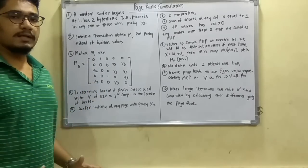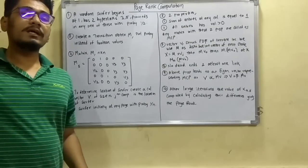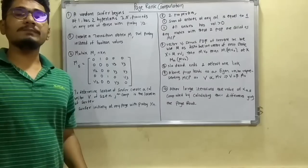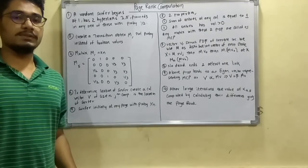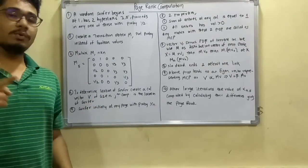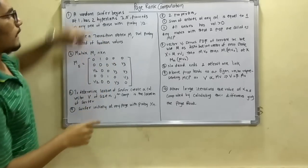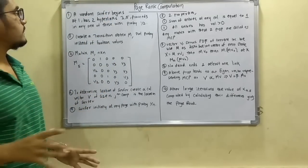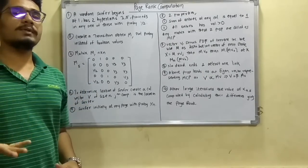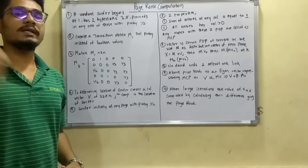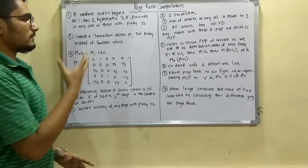The surfer begins at position number one and has got two hyperlinks. You can think of this in terms of page rank and web search engines. There are two ways he can proceed — either to three or five — with a probability of half each. That is, 0.5 probability of traversing in one direction. To represent this, we create a transition matrix M.